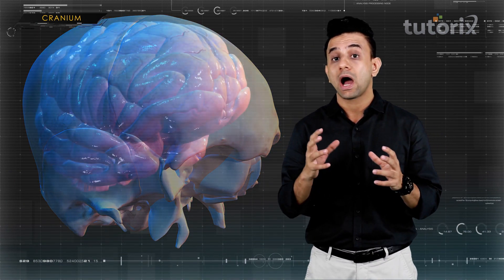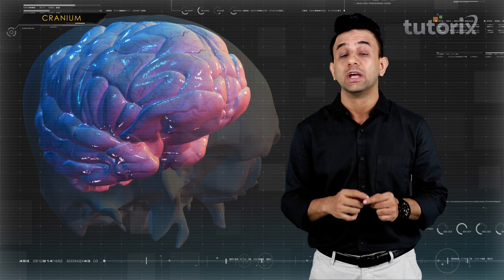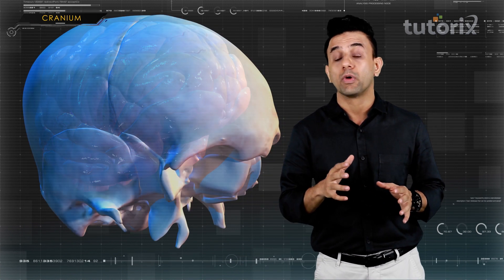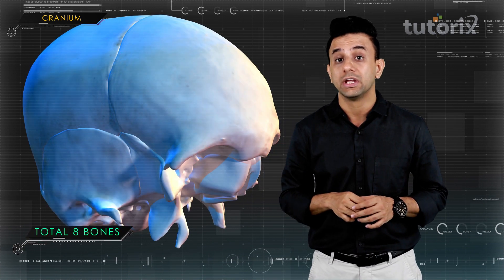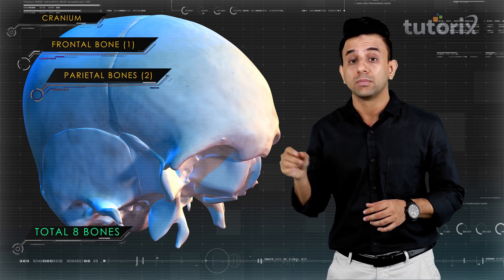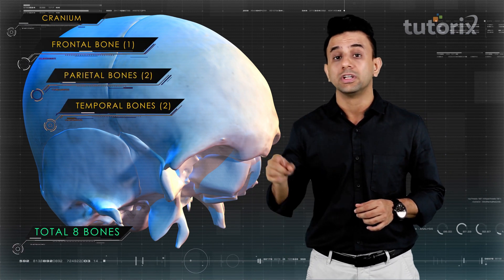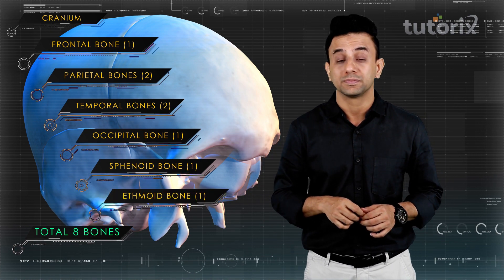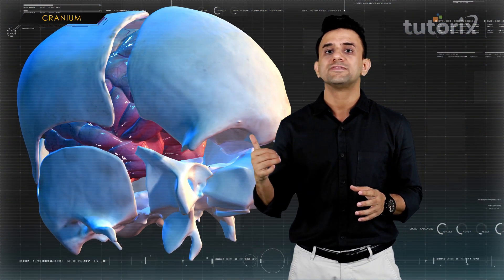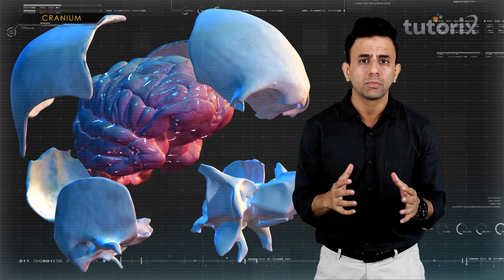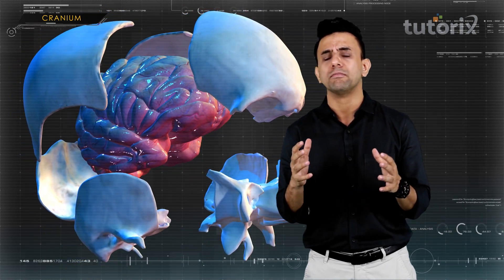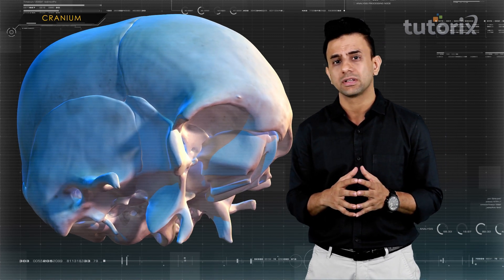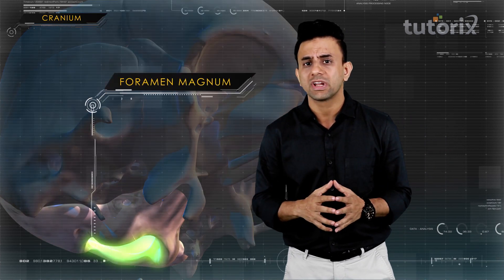The part of the skull which surrounds the brain is the cranium. The cranium has eight bones: the frontal bone, the two parietal bones, the two temporal bones, the occipital bone, the sphenoid bone, and the ethmoid bone. These bones form a bony wall around the brain and have many openings through which blood vessels and nerves pass.